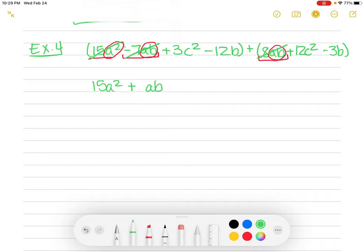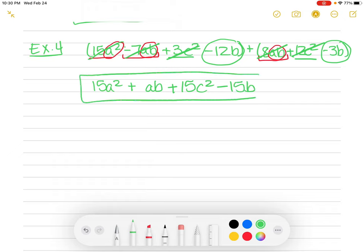So now I'm going to cross those two out because I've already got those. And now I'm going to go to the next one, 3c squared. Well, I have a 12c squared over here. So I'm going to put those together. And that gives me 15c squared. Now those are gone. And my last one is the minus 12b and the minus 3b. That's going to give me minus 15b. And there's my answer.